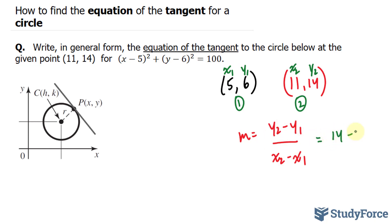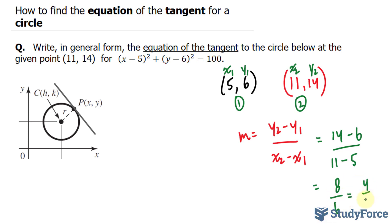Let's fill in these variables with these numbers. We end up with 14 minus 6 over 11 minus 5. 14 minus 6 is 8, and 11 minus 5 is 6, which gives us 4 over 3. So 4 over 3 is the slope of this line.